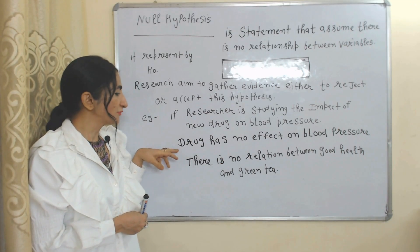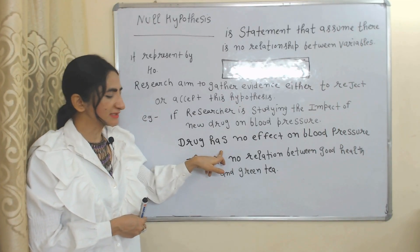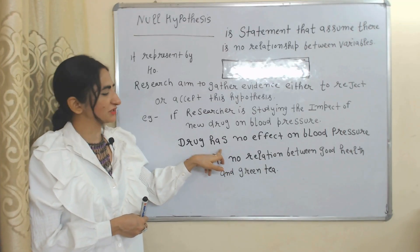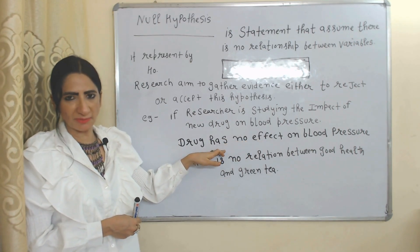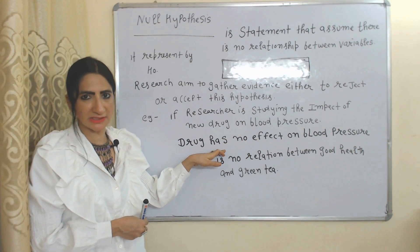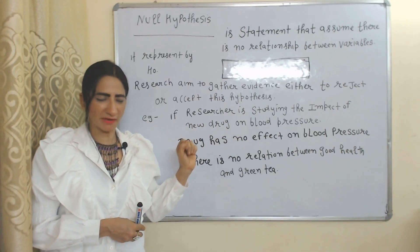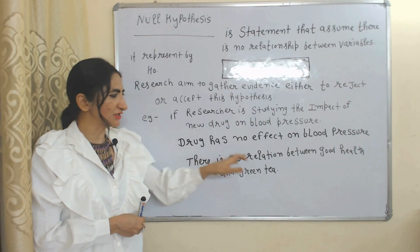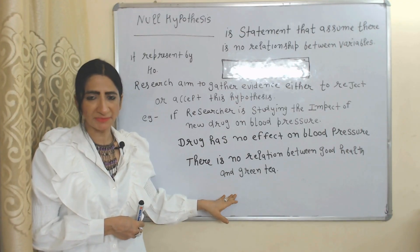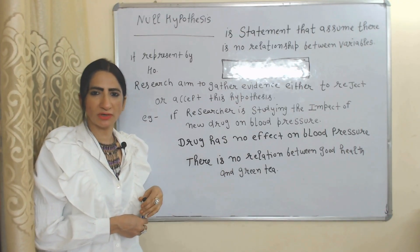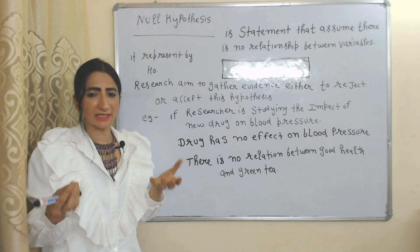For example: 'drug has no effect on blood pressure.' This statement shows there is no relationship between drug and blood pressure, so this will be called a null hypothesis. Similarly, 'there is no relationship between good health and green tea' — this statement will also be called a null hypothesis.